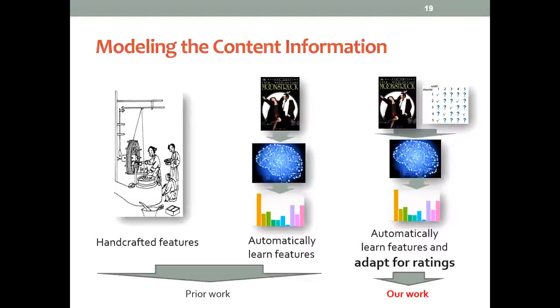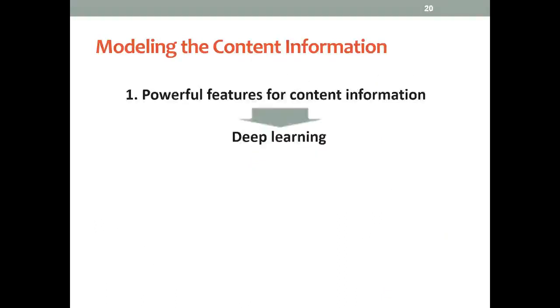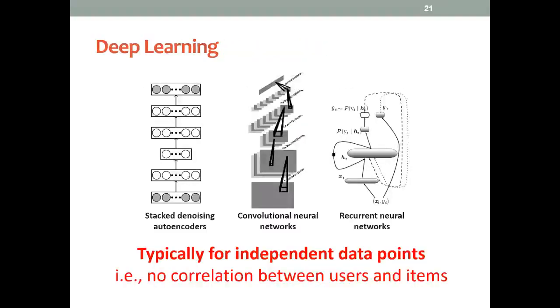Unfortunately, although deep learning can readily produce powerful features and representations for subsequent tasks, it usually works only for independent data points. That means there will be no correlation between users and items, which is naturally not true for recommender systems.